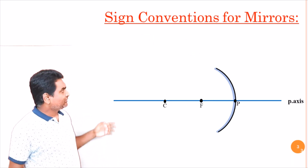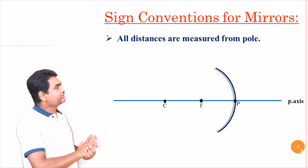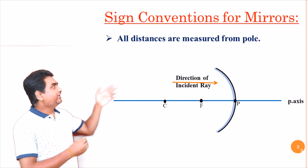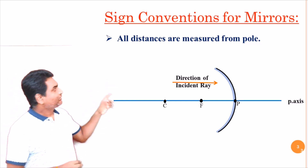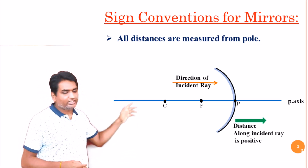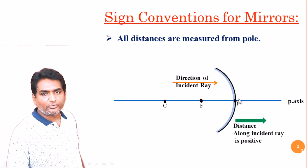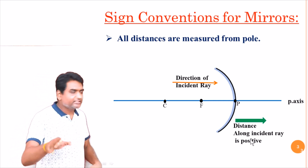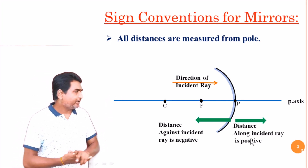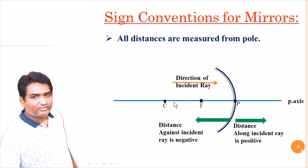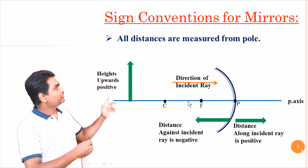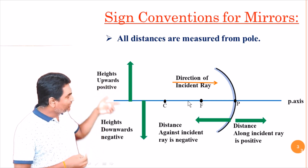The first point is: while measuring the distances, all the distances should be measured from the pole. And the next one is we have to consider the direction of the incident ray. All the distances measured along the direction of the incident ray are treated as positive, and all the distances measured against the direction of the incident ray are treated as negative. All the heights measured above the principal axis are positive, and the heights measured below the principal axis are negative.